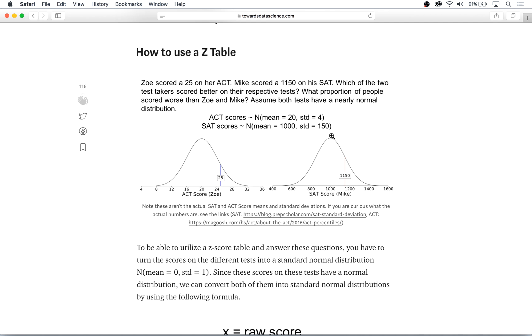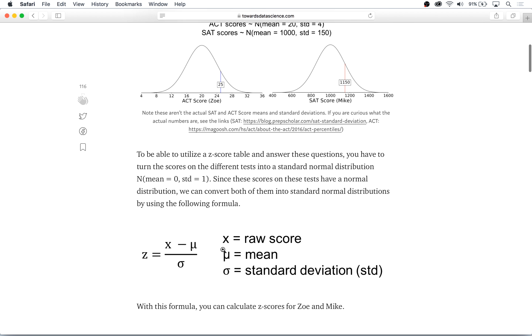To be able to utilize a z-table, we have to turn these normal distributions into standard normal distributions, which means that we have to make these distributions have a mean of 0 and a standard deviation of 1. This is called standardization, which is pretty easy to do with the following formula: z equals x minus μ over σ, where μ is the mean and σ is the standard deviation.